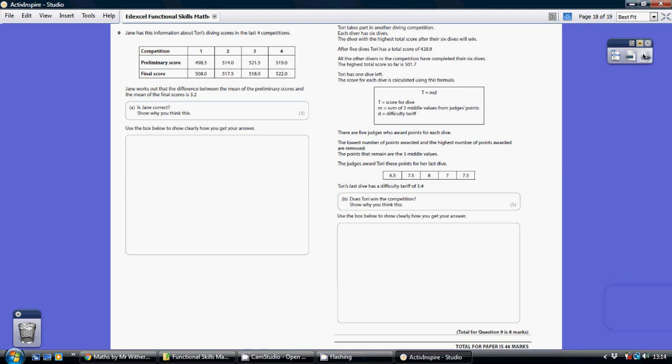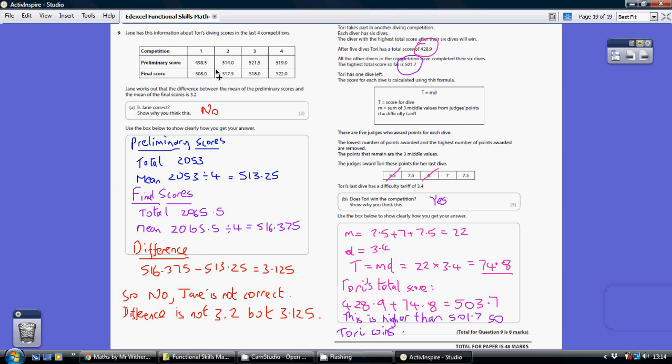Question nine. We've got to compare the mean averages. So how do you work out the mean? You add up all the numbers and divide by the number of numbers.